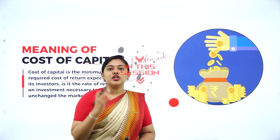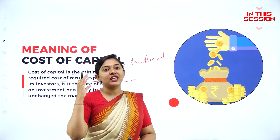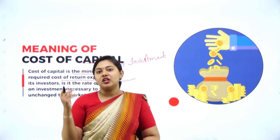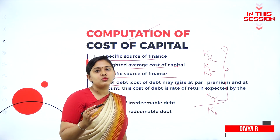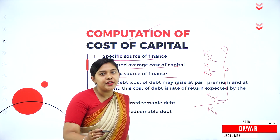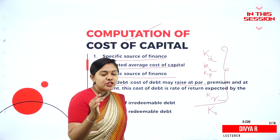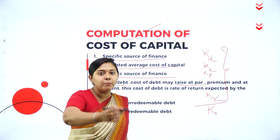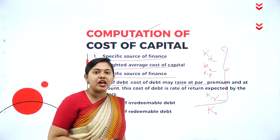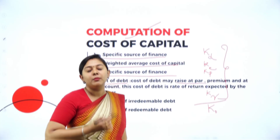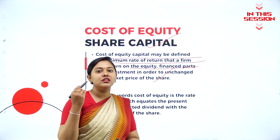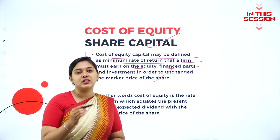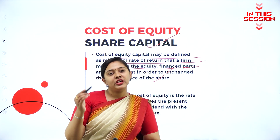For raising a debenture, you have to pay the interest and that interest is called as the cost of debenture. If 100 rupees is the face value and it is issued at 100 rupees itself, then it is issued at par. If it is 100 rupees face value issued 10% more than the face value, it is issued at a premium. The minimum rate of return the equity shareholders has to get is called as cost of equity.